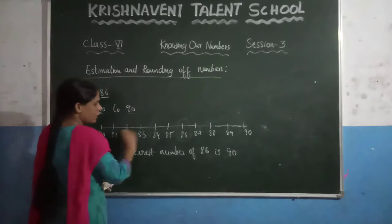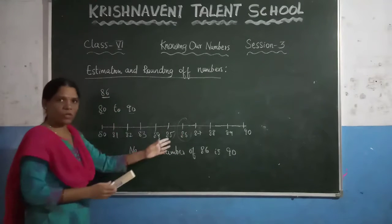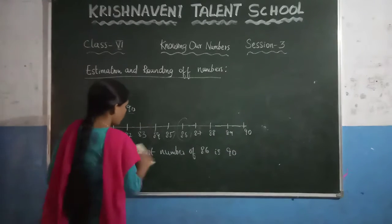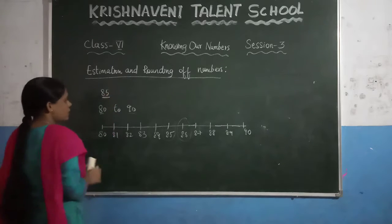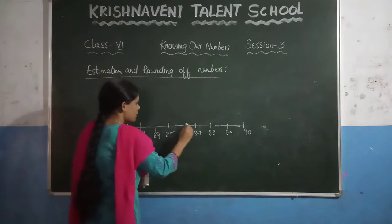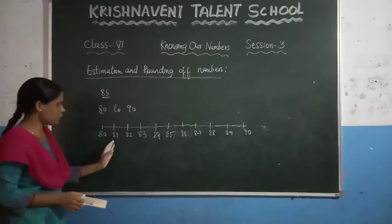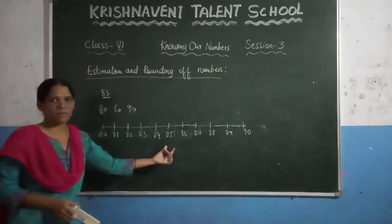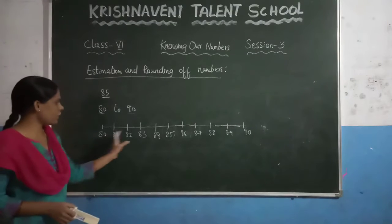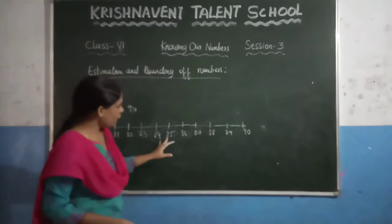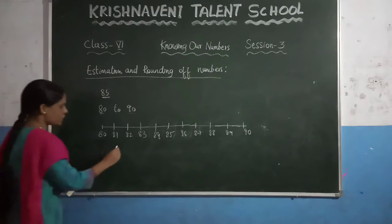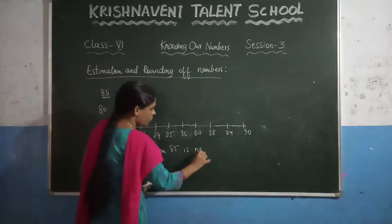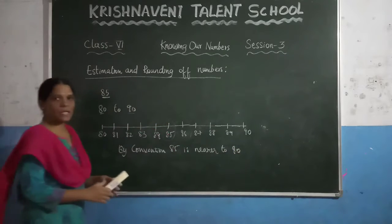You can observe that in between these two numbers, what will be the number 85? Before 85, all the numbers are nearer to 80, and after 85, all the numbers are nearer to 90. What will happen if you take the number 85? 85 is right in the center — in between 80 and 85 there are 4 numbers, and in between 85 and 90 there are also 4 numbers. But by convention, you always say that 85 is nearer to 90. And this is the estimation of numbers.